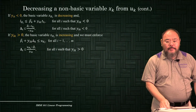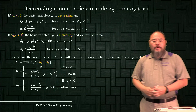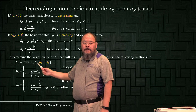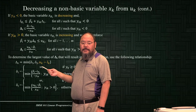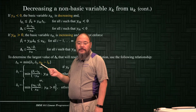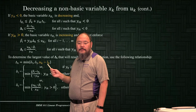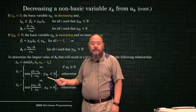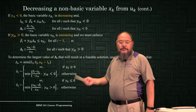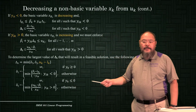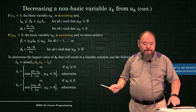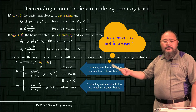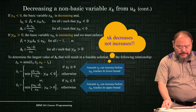We're going to use delta_k as the minimum between three things: first, the range of xk moving from its upper bound to its lower bound — uk minus lk; delta one, representing when one of the basic variables reaches the lower bound; and delta two, meaning one of the current basic variables reaches the upper bound. That determines the maximum amount xk can decrease to maintain feasibility.